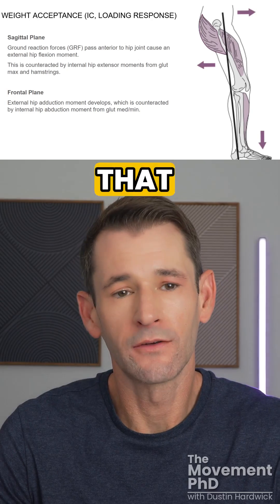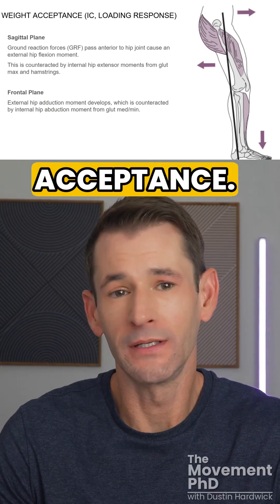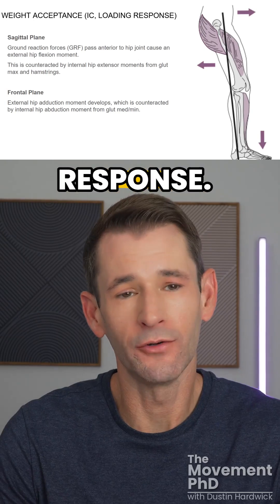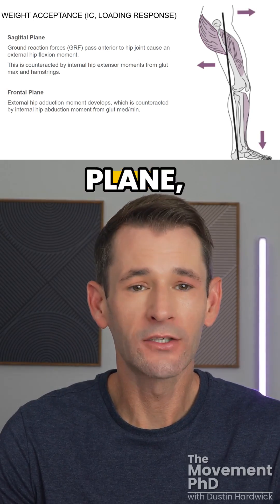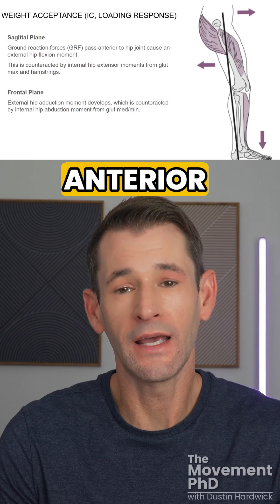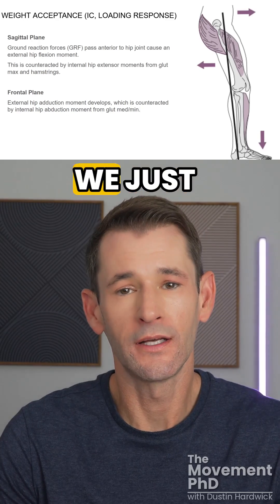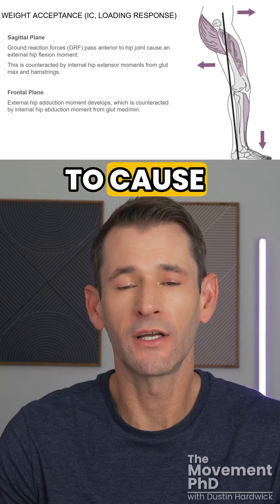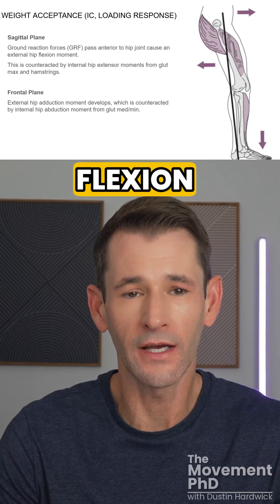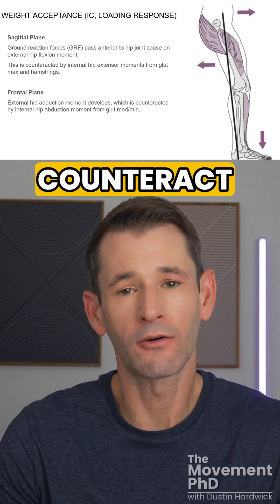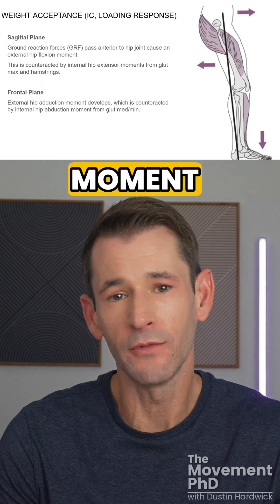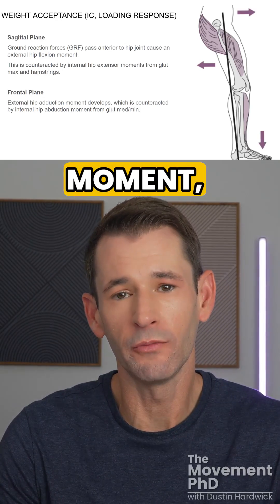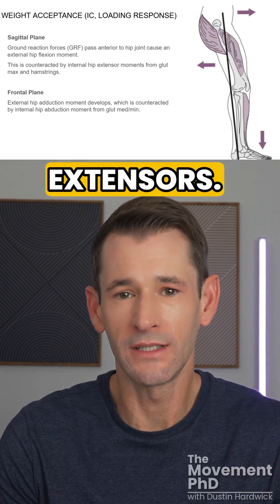The first phase of the gait cycle that we'll talk about is weight acceptance, which is just initial contact plus the loading response. In the sagittal plane, the ground reaction forces pass anterior to the hip joint. As we just discussed, any force that's anterior to the hip joint is trying to cause an external hip flexion moment. So we need to counteract that external flexion moment with an internal force — and the muscles that can produce that internal moment are going to be our hip extensors.